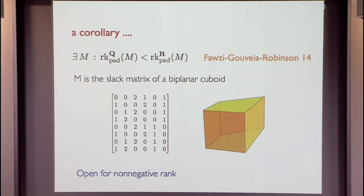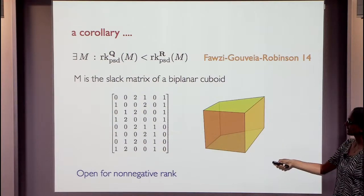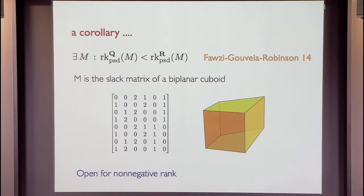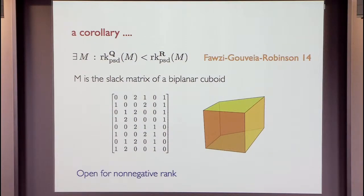One corollary of minimality studies: PSD rank depends on the field. PSD rank over the rational numbers can be strictly bigger than PSD rank over the real numbers, shown in a paper by Hamsa, Joao, and Richard. This question remains open for non-negative rank — we do not know if non-negative rank depends on the field.